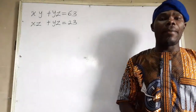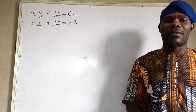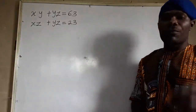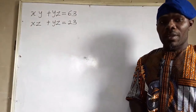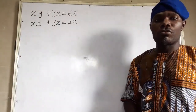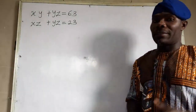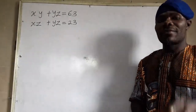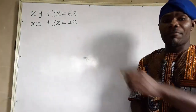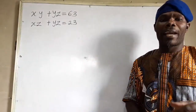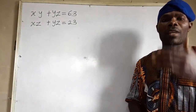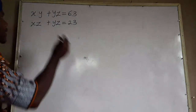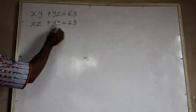Today we want to solve an Olympic mathematics problem. This is a system of two equations with three unknowns. Normally when you have three unknowns you use a determinant, but here we want to manipulate and get the value of x, y, and z. Before I start solving this question, don't forget to subscribe to this channel and share this video.